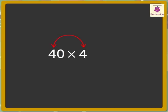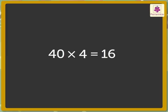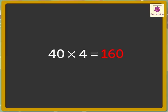Now, multiply the digits other than the 0. That is, 4 and 4. We get 16 as the product. Remember, we have to add the 0 in the multiplicand at the end of the product. So, we got the answer as 160.